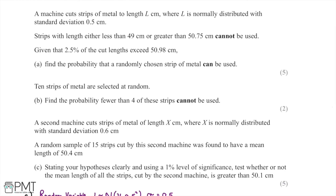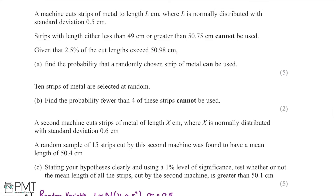In this question, a machine cuts strips of metal to length L, measured in centimetres, where L is normally distributed with a standard deviation of 0.5 centimetres. Strips with length either less than 49 centimetres or greater than 50.75 centimetres cannot be used. We're told that 2.5% of the cut lengths exceed 50.98 centimetres, and we're asked to find the probability that a randomly chosen strip of metal can be used.